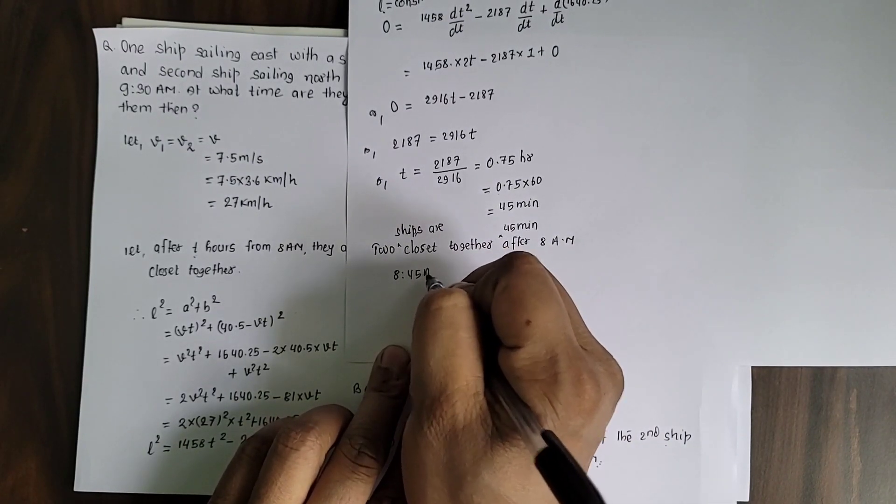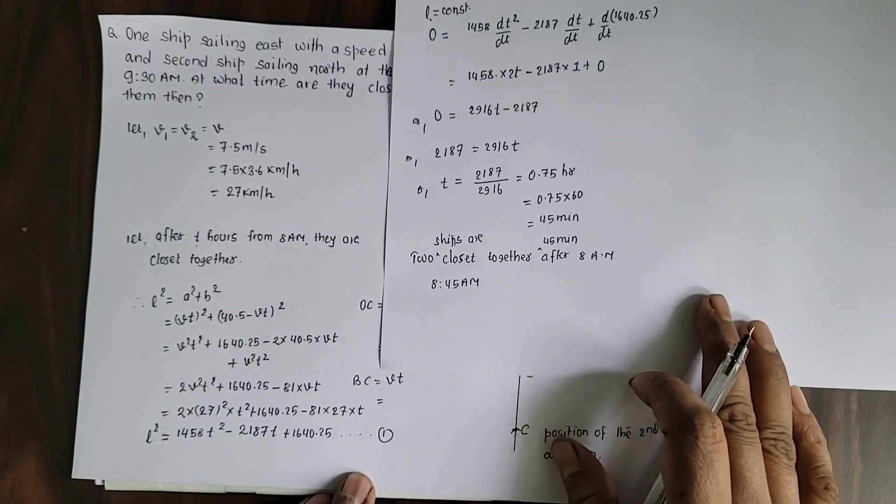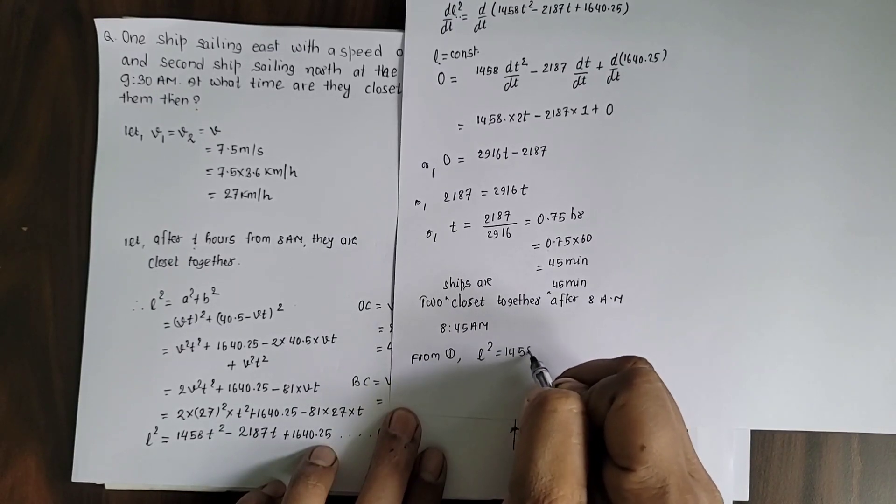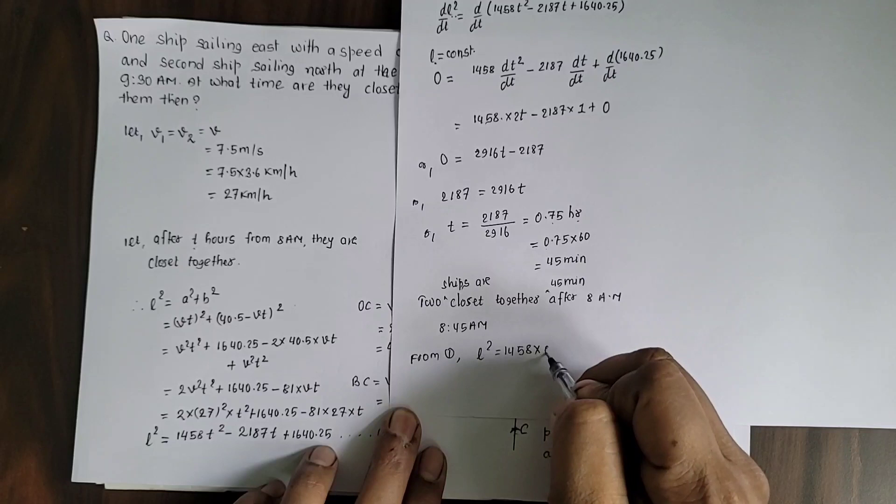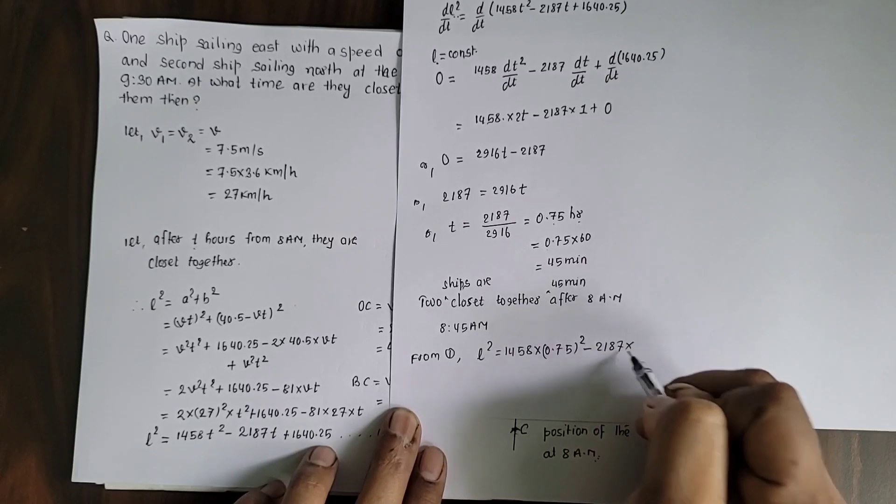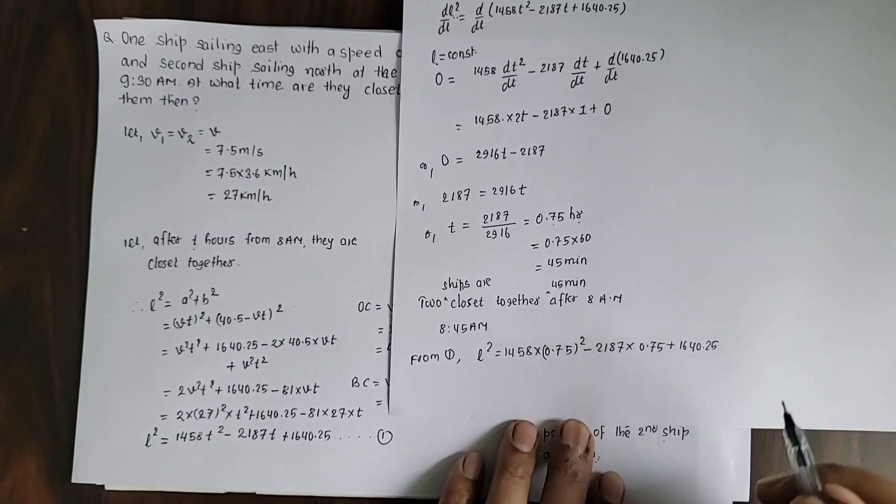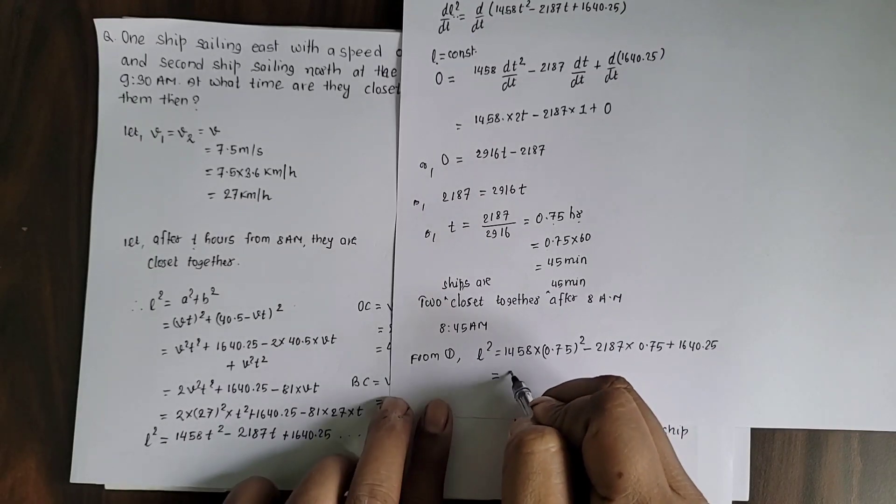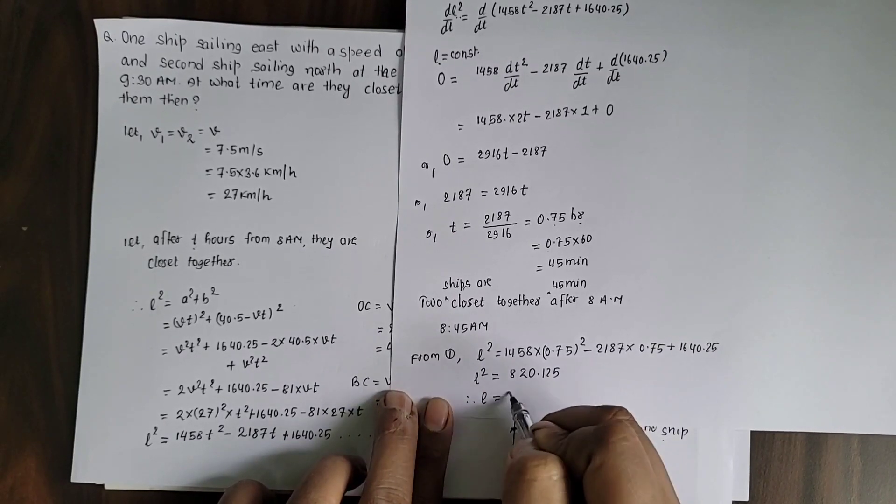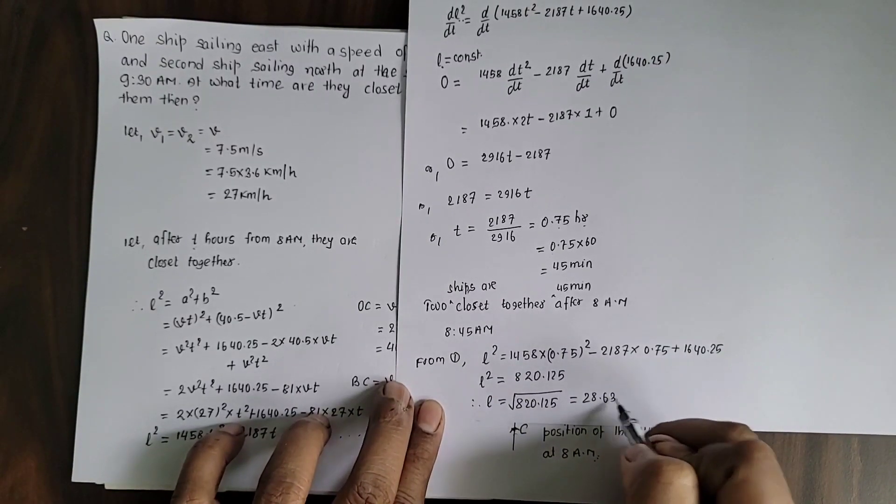At 8:45 AM, both ships are closest together. To find the minimum distance between the ships, we use equation 1: L² = 1458(0.75)² - 2187(0.75) + 1640.25. Solving this gives L² = 820.125. Therefore, L equals the square root of 820.125, which equals 28.63 kilometers.